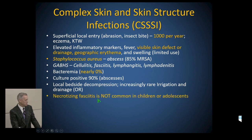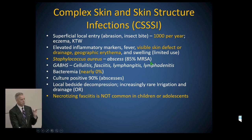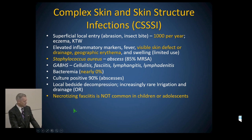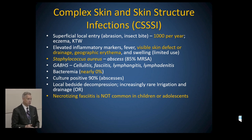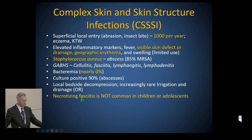Staph aureus for abscesses; strep for cellulitis, fasciitis, lymphangitis, and lymphadenitis — with bacteremia nearly zero percent. I say 'nearly' because I've had a case of lymphadenitis with a large lymph node and staph aureus bacteremia that on MRI had no deep infection, and three cases of Group A beta-hemolytic strep bacteremia in kids with all-superficial infection feeding bacteria into the bloodstream. We push on these at bedside with EMLA and a little heat, and do bedside decompression to get cultures. We're now seeing more clindamycin resistance in these superficial infections in our community.